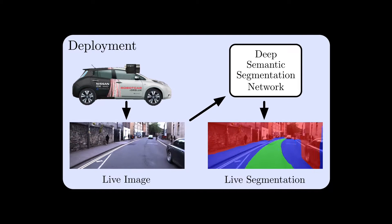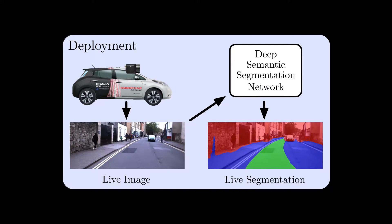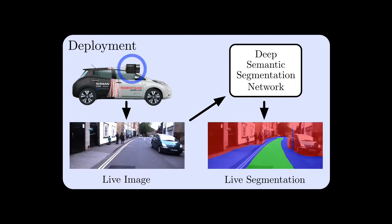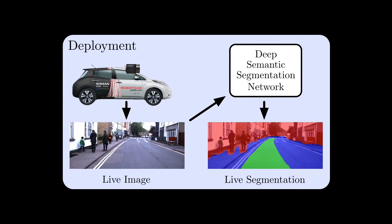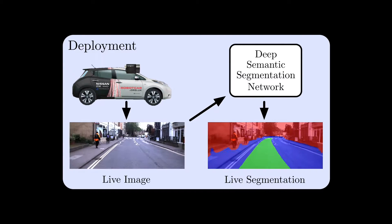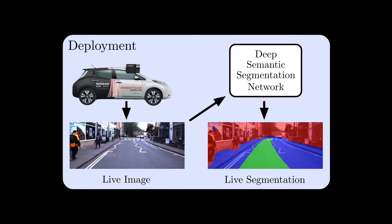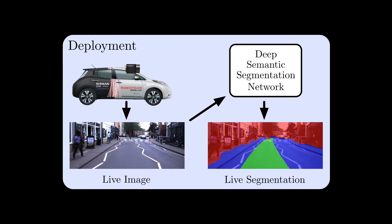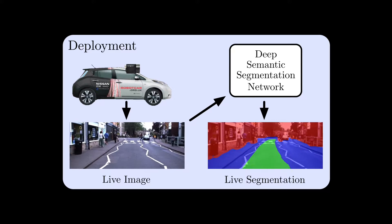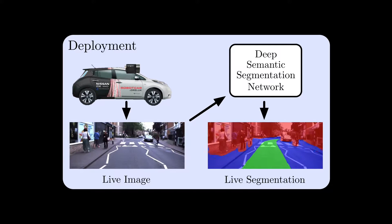At run time we use a vehicle equipped with only a monocular camera. Using the trained network we can segment the proposed path as well as nearby obstacles in real time.